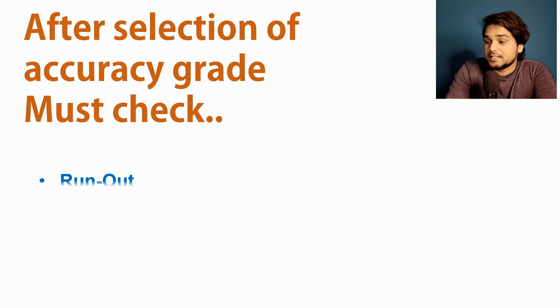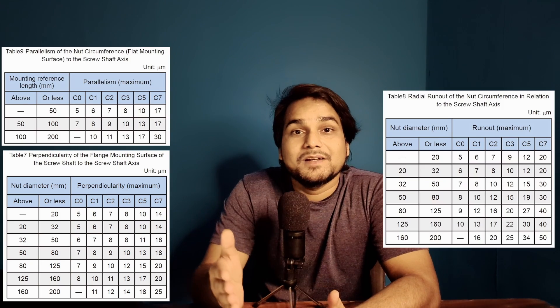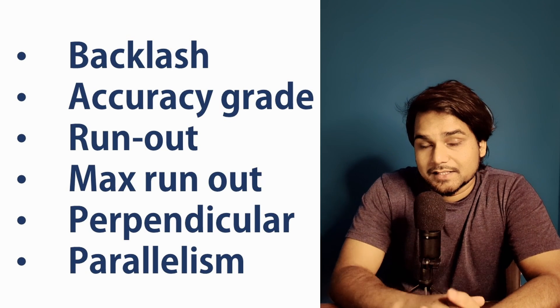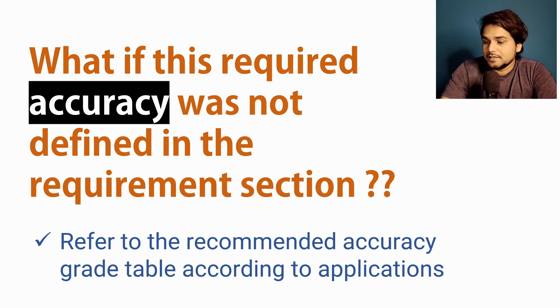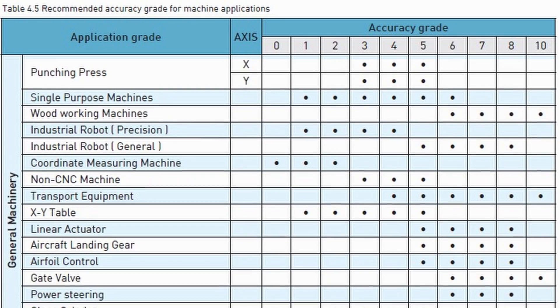After selecting the grade, we should also check runout, parallelism, and perpendicularity of the nut with the screw for the selected grade, because axial and angular accuracy alone may not be sufficient for your application. You can also select the grade based on these parameters, and if the requirements are not satisfied, go for a more precise grade or even a precision ground ball screw. If the required accuracy is not defined in the requirement, we can refer to a recommended accuracy grade table according to application type — I will leave this table in the description.